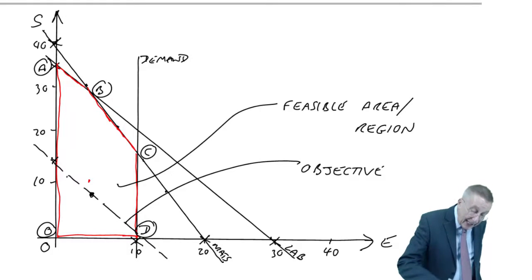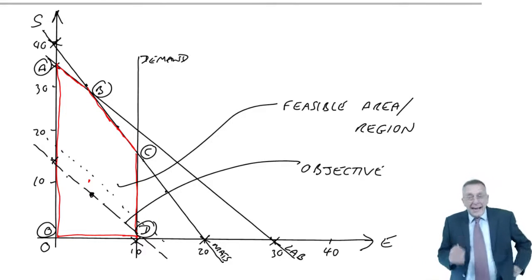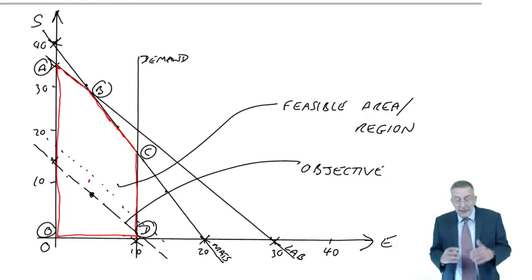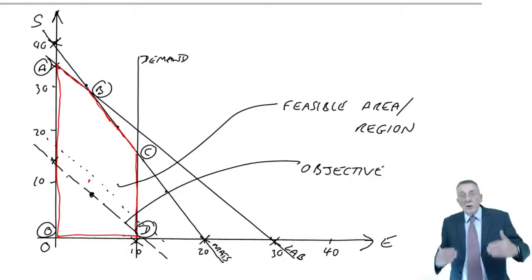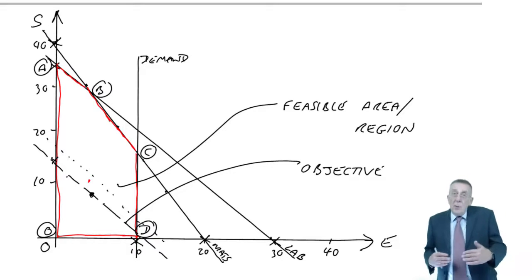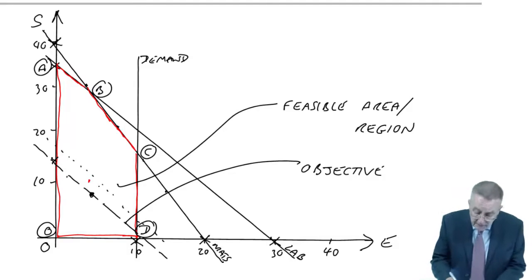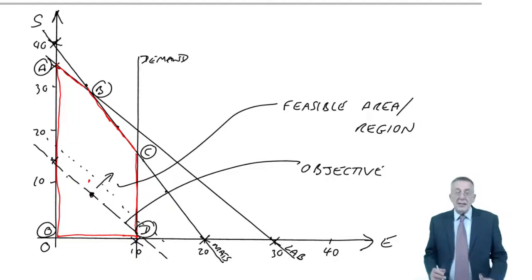But if you repeated the exercise with a contribution of 100, you'll get a line like this, which would be exactly the same angle, slope, gradient, whatever word you want to use. But the more the contribution is, the further out it will be.